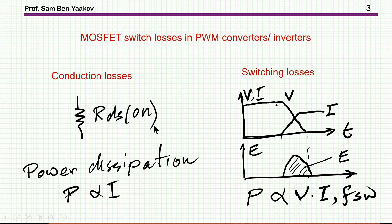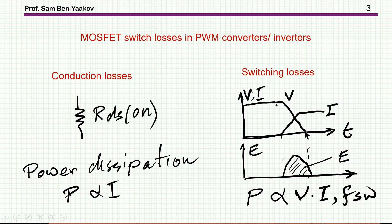Let's have a look first at what are the causes for losses. I'm talking about the MOSFET losses, not the core or other losses. We have first of all conduction losses due to the RDS_on of the MOSFET transistor, and the power dissipation will be proportional to the RMS current passing through this transistor. Then we have the switching losses, which are due to an overlap between the drop of voltage at turn-off and the rise of current — this overlap means energy dissipation, and multiplied by frequency it becomes power. So the power is proportional to the voltage across the device and the current through it.